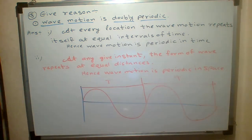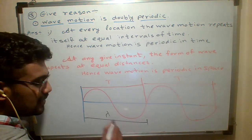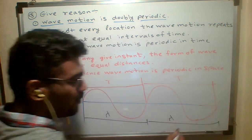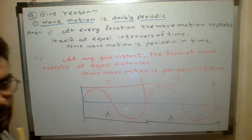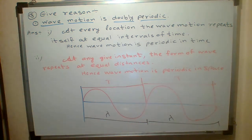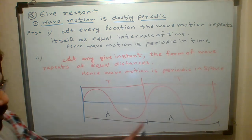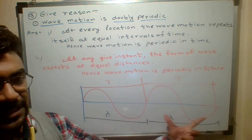At any given instant, what do you say about the form of the wave? Distance is also the same. So wave is periodic in space also. We always repeat in space.